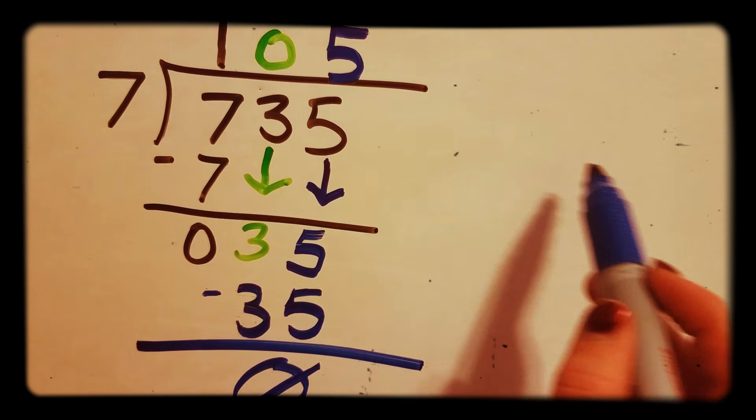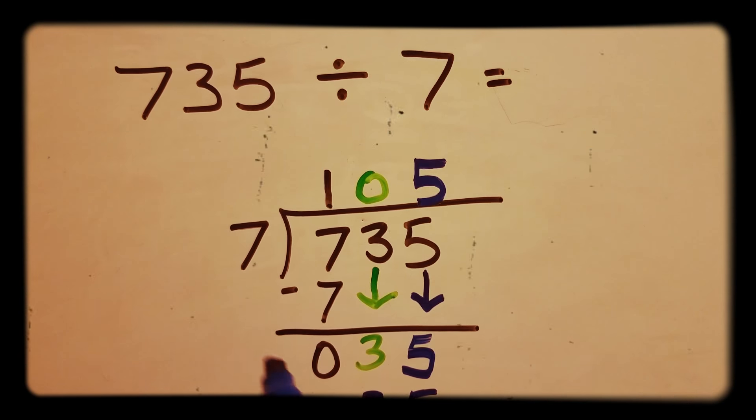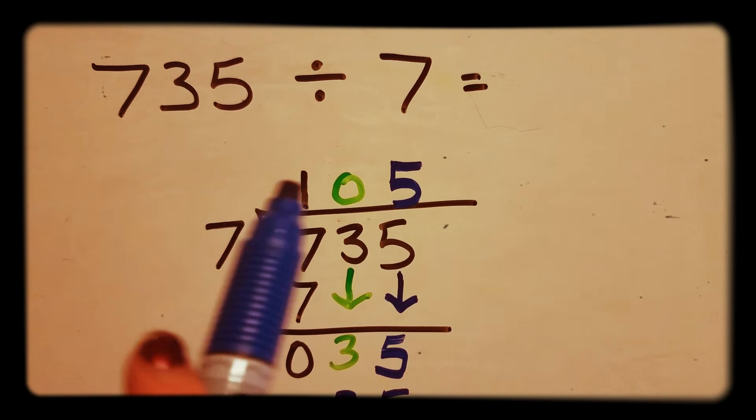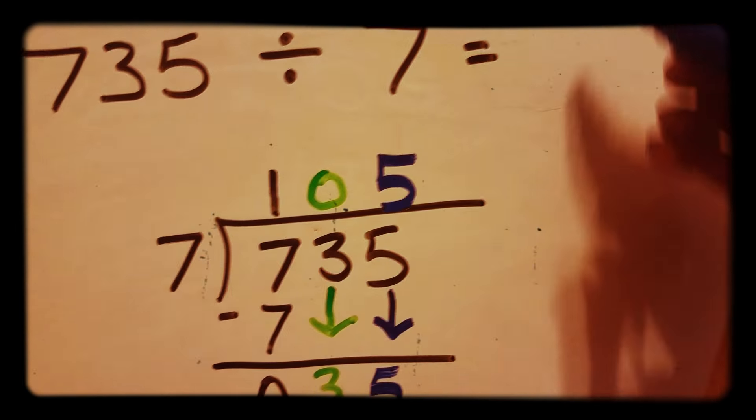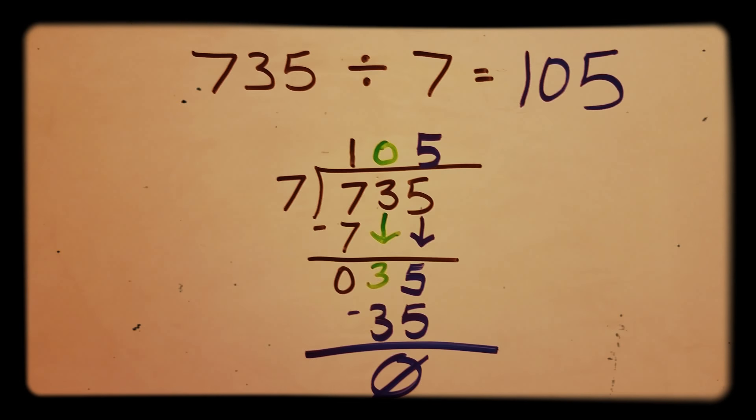And since there are no other numbers over here and your number is at 0, you're done. So 735 divided by 7 is 105.